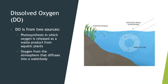Dissolved oxygen comes from two sources. The first is photosynthesis — just like how we exhale carbon dioxide, plants release oxygen, and if those plants are in or very close to a water body, that oxygen gets released into the water.